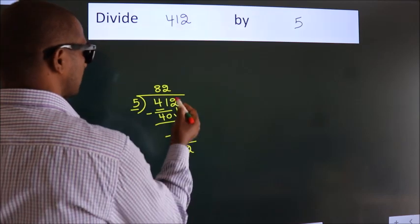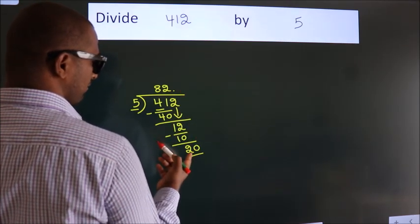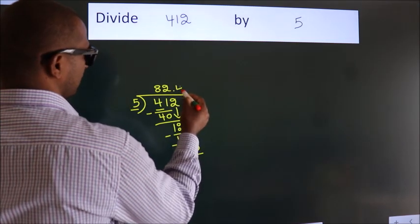So what we do is put a dot and take 0, giving us 20. When do we get 20 in the 5 table? 5 times 4 equals 20.